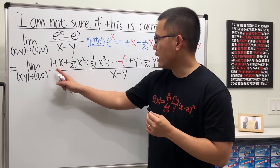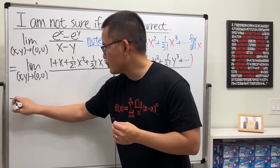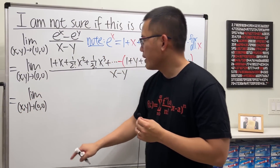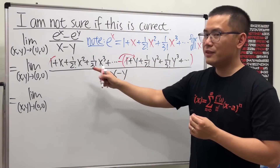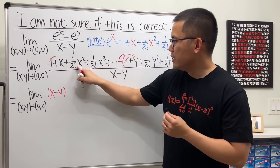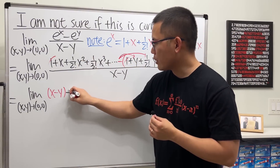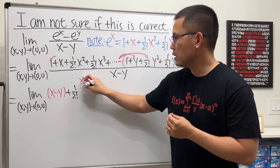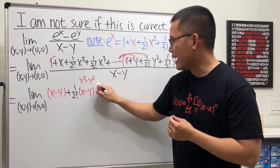One minus one equals zero, which is good. Now writing this out again: limit as (x, y) approaches (0, 0). We have x minus y from the first-degree terms. Then, distributing the negative and factoring out one over two factorial from the next terms, we're looking at x squared minus y squared — difference of two squares — which factors as (x minus y)(x plus y).